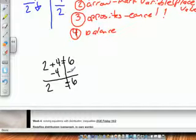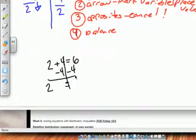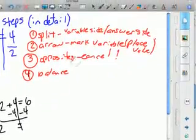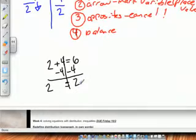Well, what if I did balance? What if I did whatever I did to the left side - like I subtracted 4 - I did to the right side? So 6 minus 4 is 2. See, now the equation is back - now the variable side and the answer side are equal again.